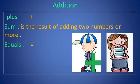Here we have plus, sum, and equals. Plus is the sign that we use for addition. Sum is the result of adding two or more numbers. Equals is the sign that we use for the result, or the total.